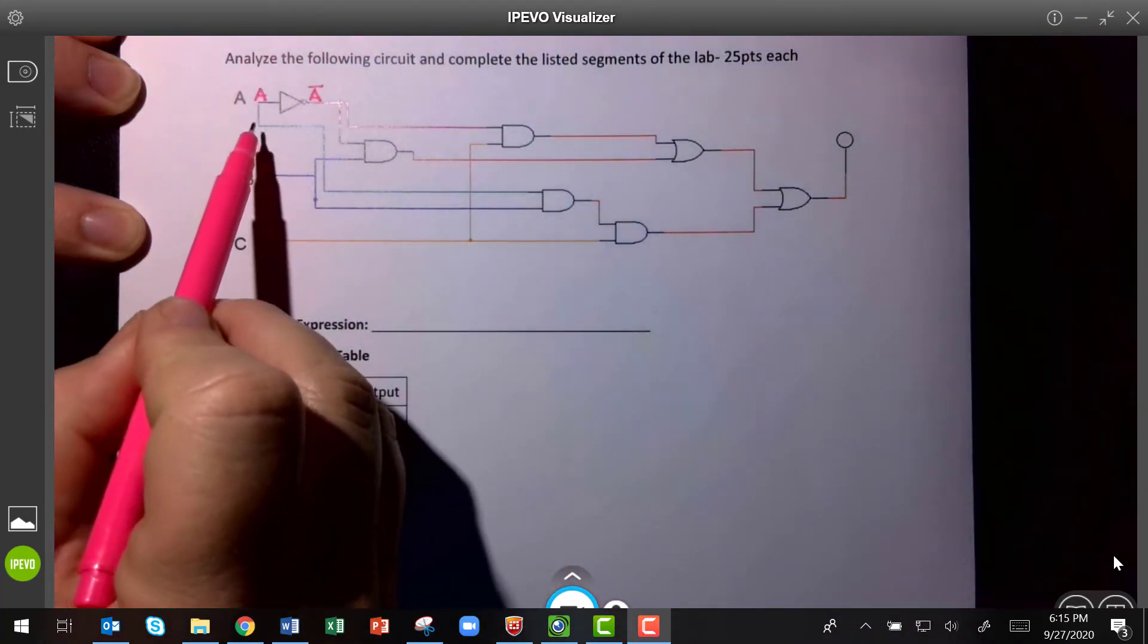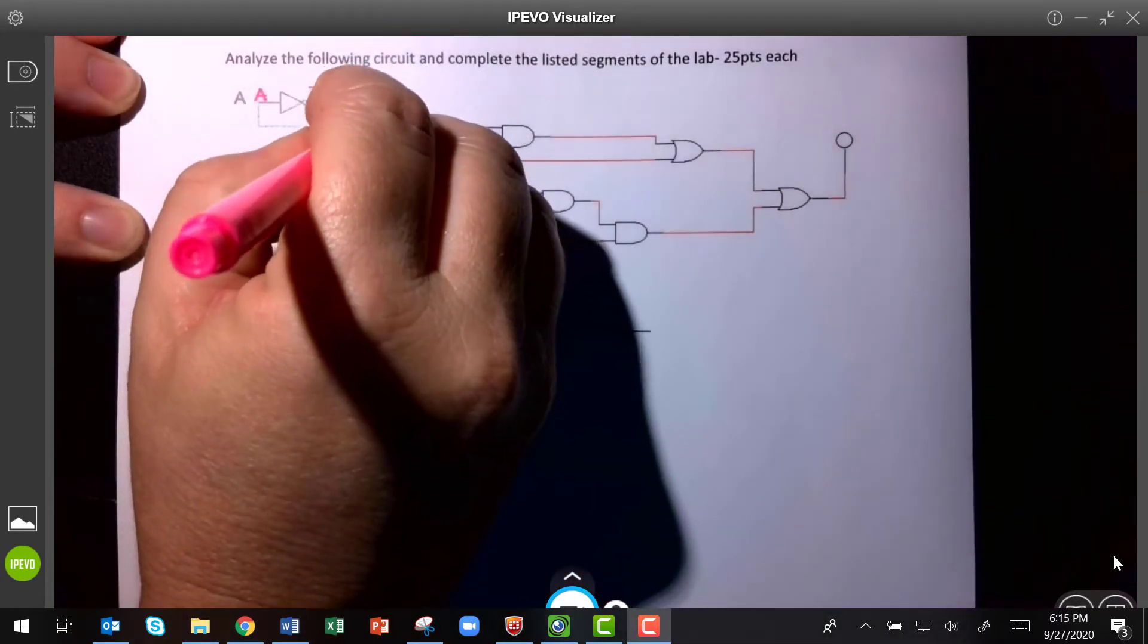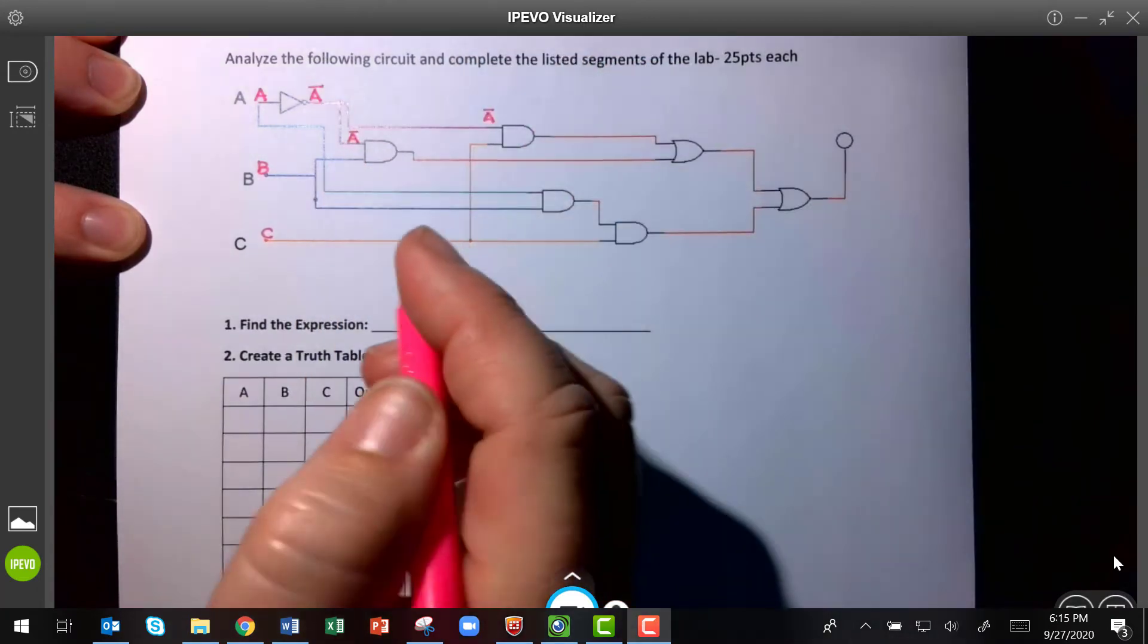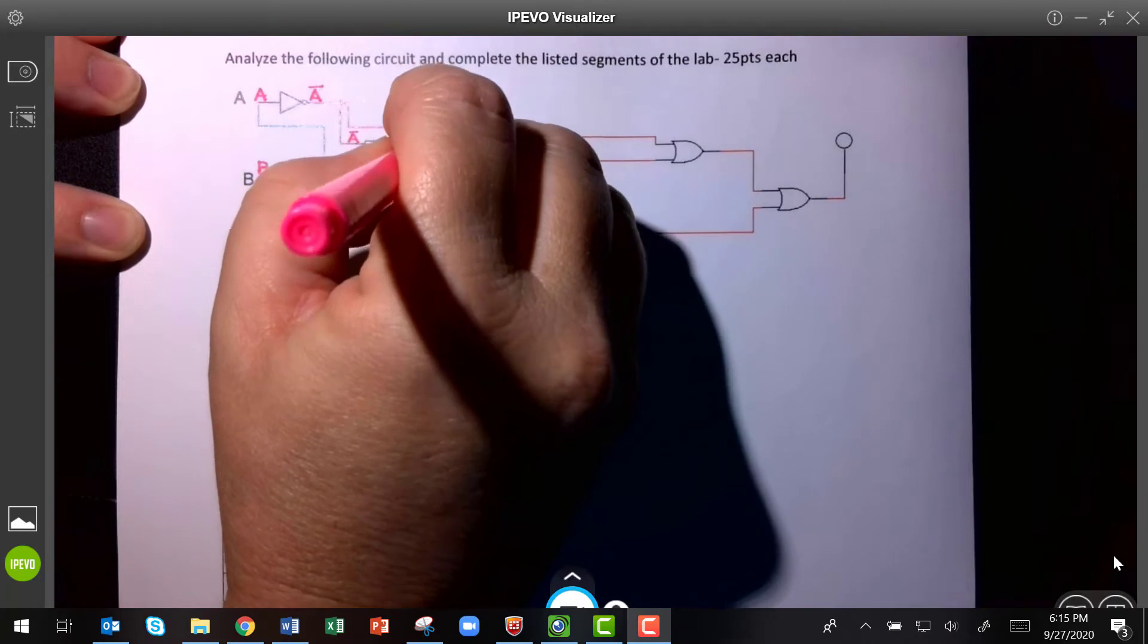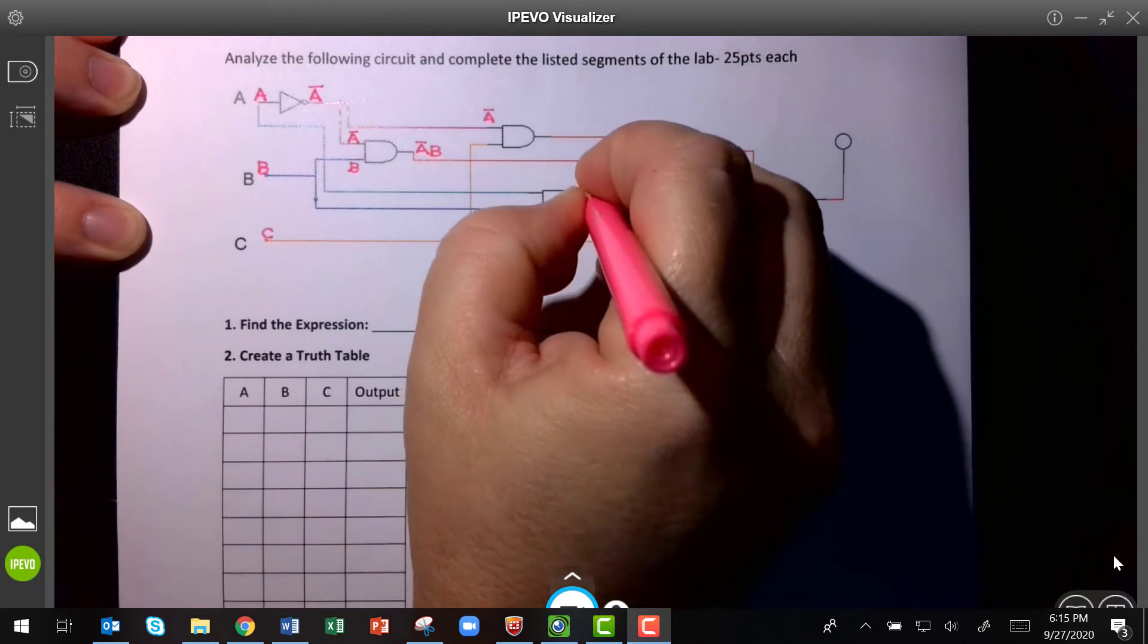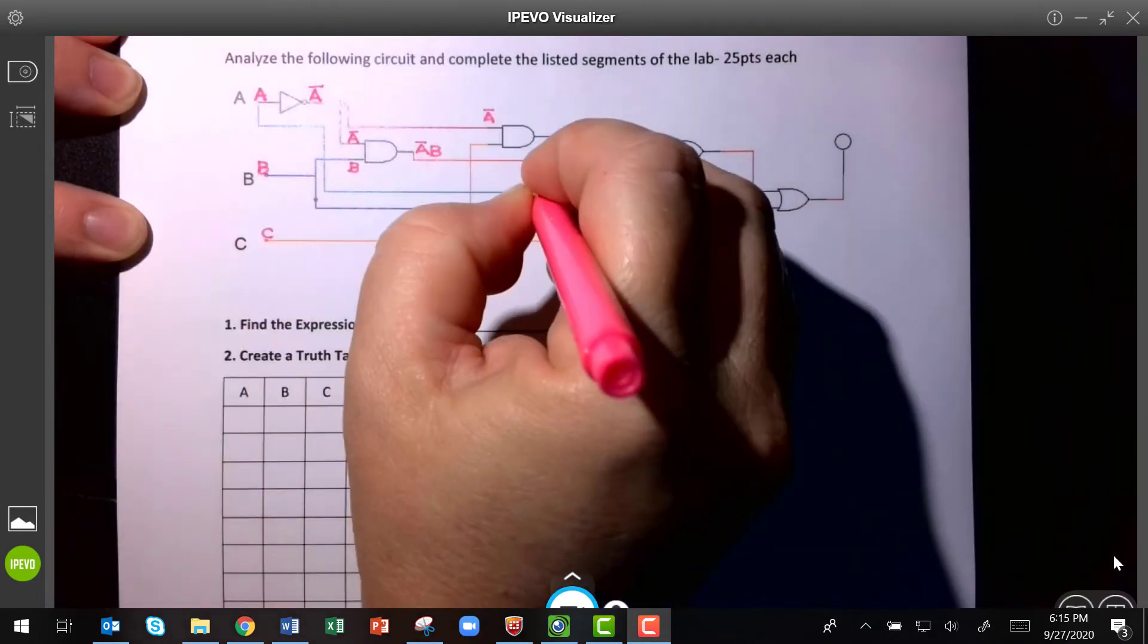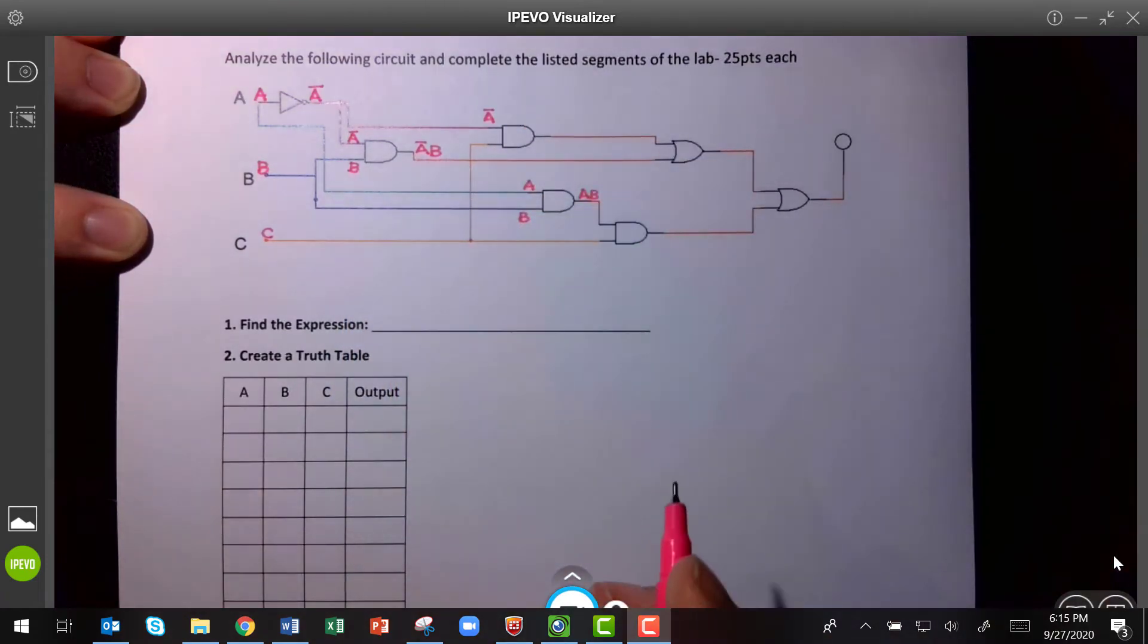Okay, so let's follow. NOT A goes into that AND gate, also goes right there. Now coming in on the other side, we have B here, so that makes this output NOT A and B, that makes this one B, and the other side of this is A, so the output of that AND gate is A and B.